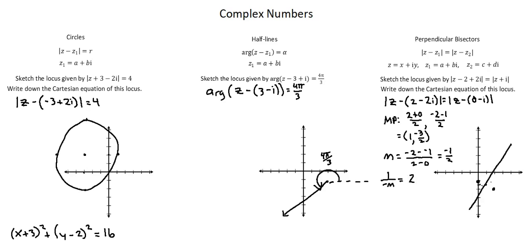And now I can draw in my perpendicular bisector. I'll also, with a dotted line, connect z1 and z2. This is the locus of points represented in the given equation.